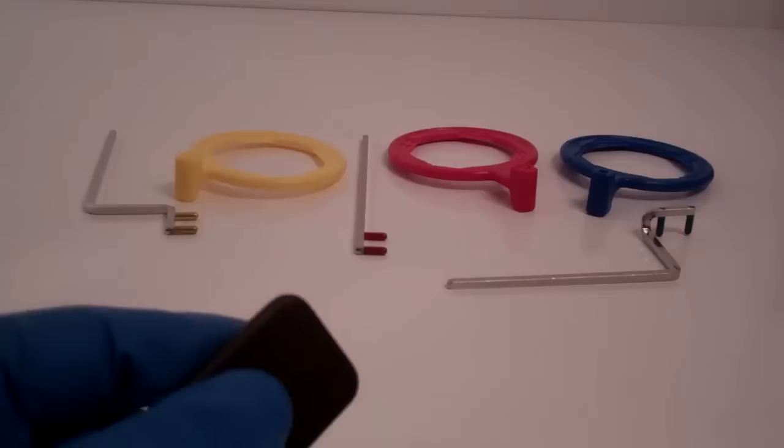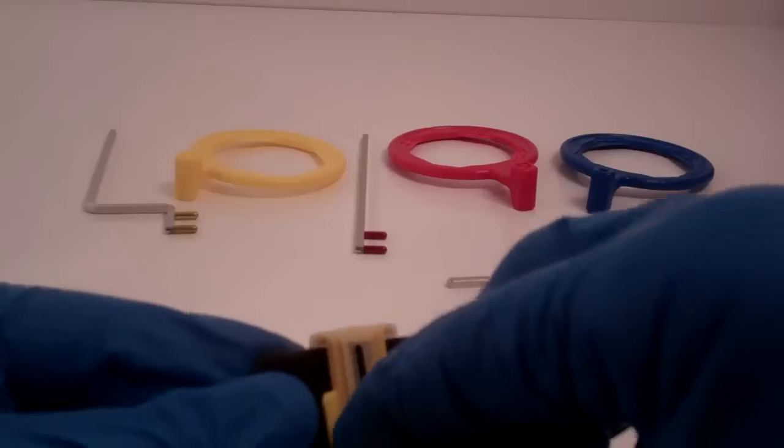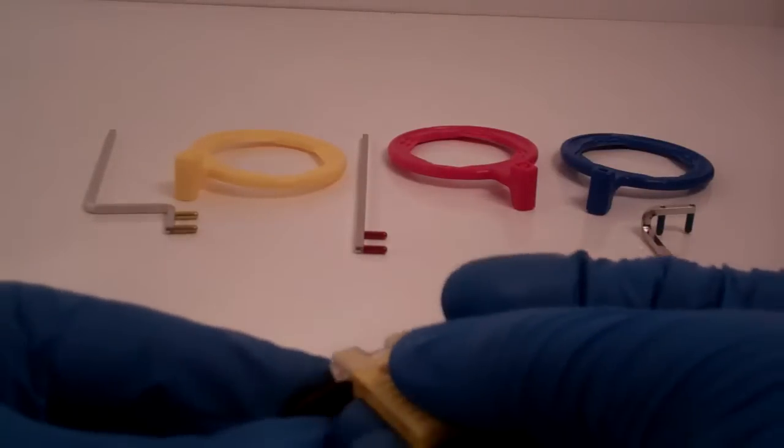And there's a bite block for each indication. The yellow would be the posterior, and you can see how that attaches there. And quadrant changes are quite easy with this sensor holder. You can see how quickly I just flipped that over.